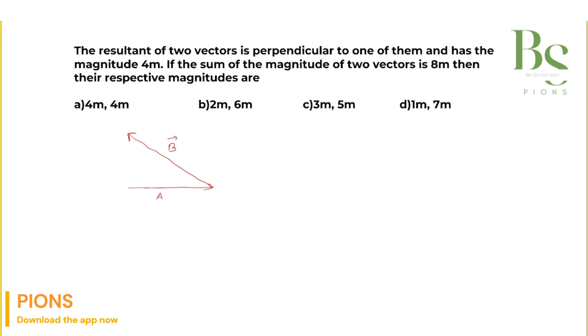The question is saying that the resultant of A and B, which is perpendicular to the first vector R. The resultant of two vectors is perpendicular to one of them, so A and B are two vectors and the resultant, using head to tail method, is perpendicular to this. This is 90 degrees, so this is our simple right angle triangle.